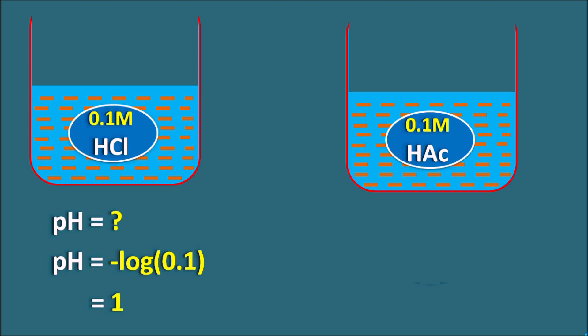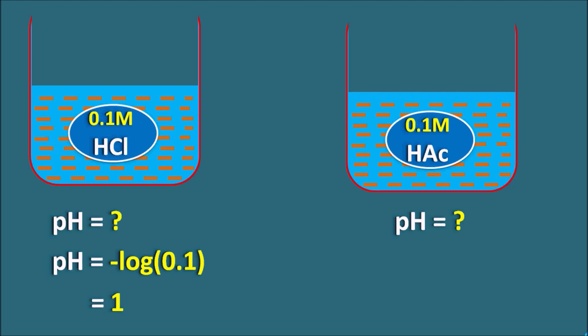Now let us take another beaker and place 0.1 molar acetic acid. What is the pH of this solution? Here the pH is not equal to minus log C, because HCl is a strong acid which is completely dissociated, whereas acetic acid is a weak acid. This weak acid cannot be completely dissociated, so within the solution we can observe both ionized as well as unionized forms. Therefore we cannot determine the pH using the simple equation pH = -log C.